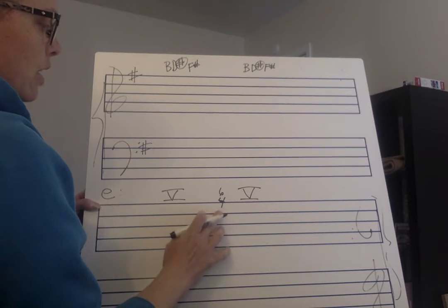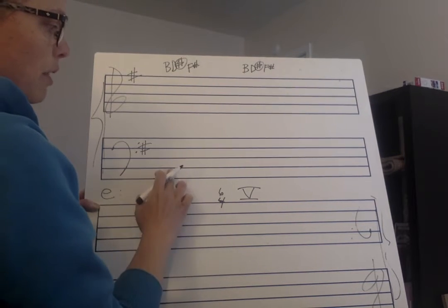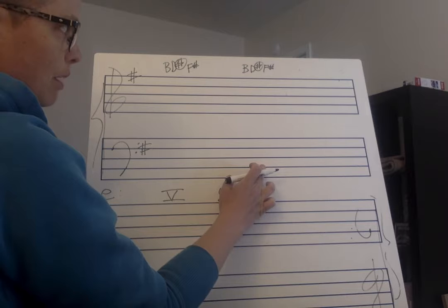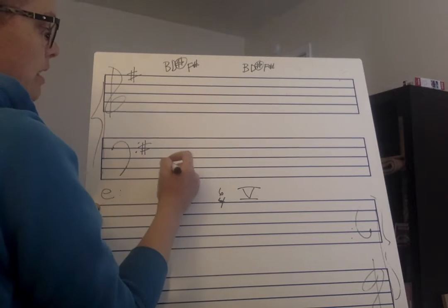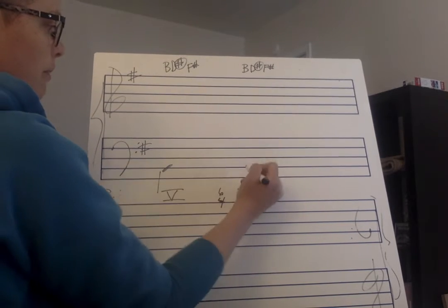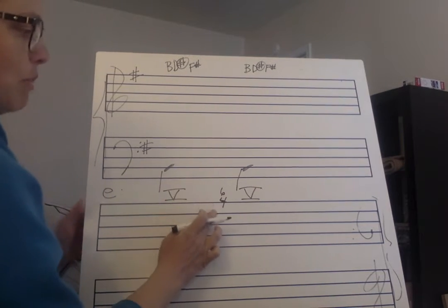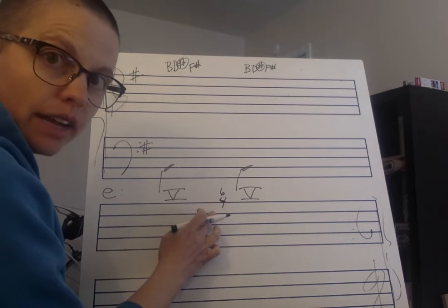And then if we go to the 6-4 chord where the bass note stays the same, well, B is going to be our bass note for both of these.